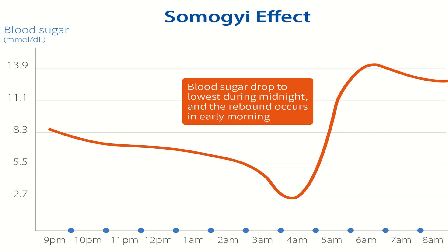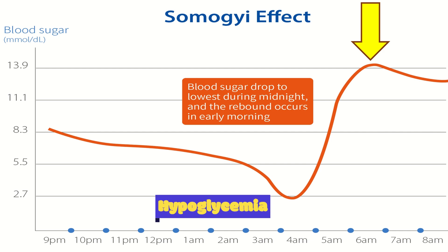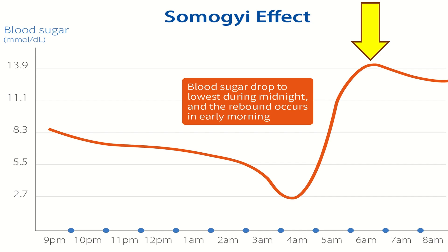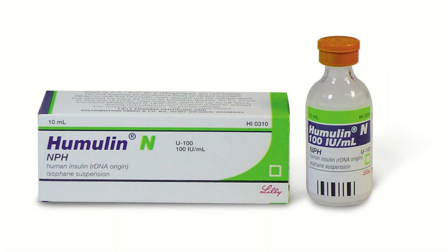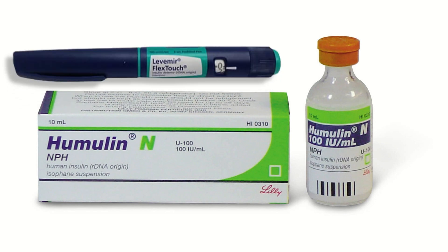Somogyi effect is morning rebound hyperglycemia following an episode of midnight hypoglycemia. It occurs due to the release of counter-regulatory hormones, caused by a high level of evening intermediate-acting insulin like NPH or long-acting insulin like Levemir or Glargine.